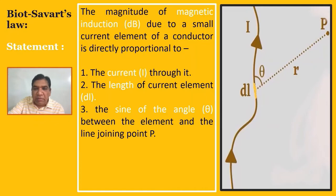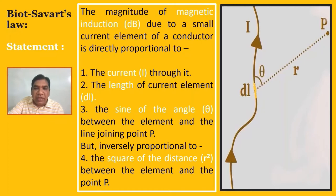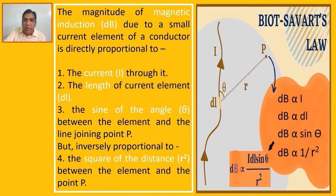But it is inversely proportional to the square of the distance R squared between the element dl and the point P.